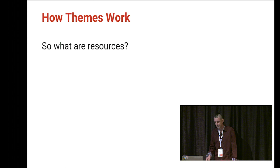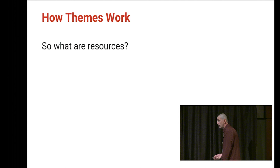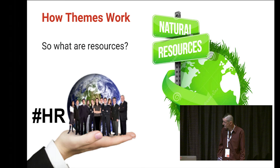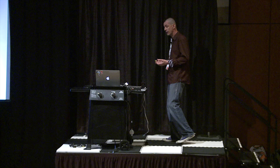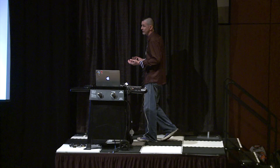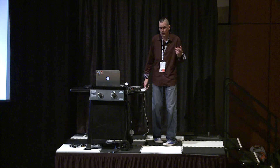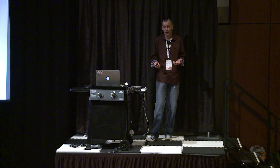To understand what's going on, we need a little background on what resources are. Resources are just assets the application can access. Besides the code, there are things called drawables — these can be bitmaps, vector drawables introduced in Lollipop, shapes, or color drawables. Themes can interchange these drawables, so they can be more flexible. If a drawable was a bitmap, we can turn it into a vector drawable or even an animated drawable.